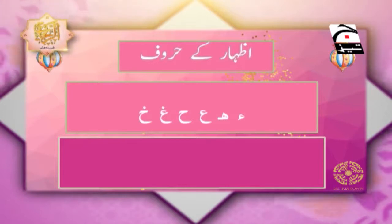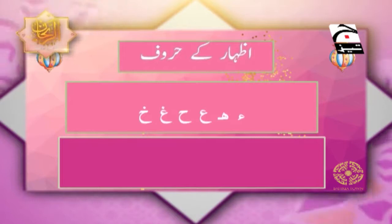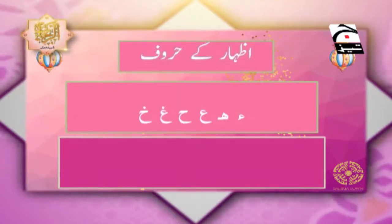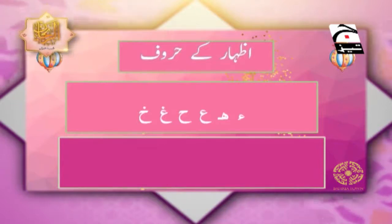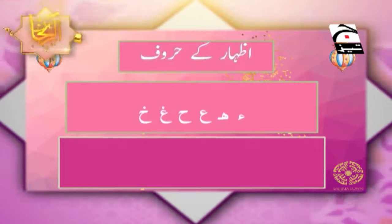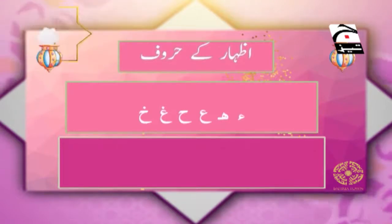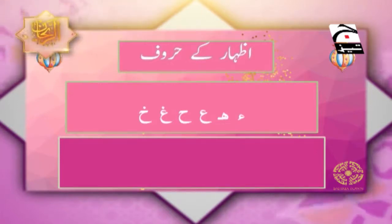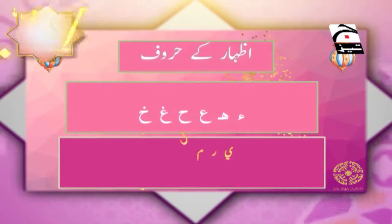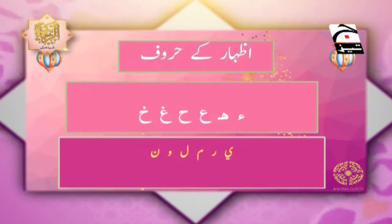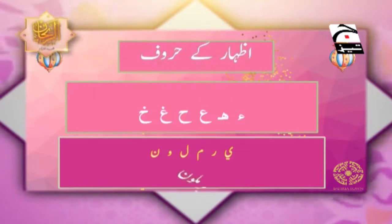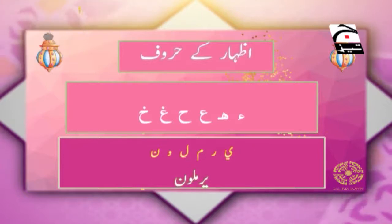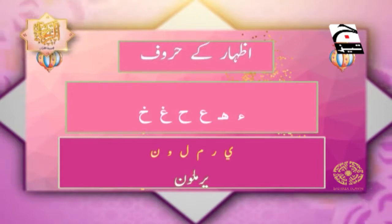اسے اظہار حلقی کہا جاتا ہے۔ اظہار حلقی کے چھے حروف ہیں: حمزہ، ہا، عائن، ہا، غائن، خا۔ اب یاد کریں ادغام کے حروف بھی چھے ہی تھے — یا، را، میم، لام، واو، نون — اور ان کو ہم نے یرملون بنا کر یاد کیا تھا۔